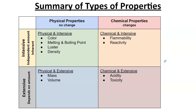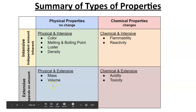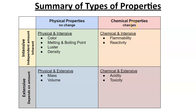Here's a summary of the different types of properties. A property can be physical and intensive, or physical and extensive, or chemical and intensive or extensive. Physical and intensive properties — like color, melting point, boiling point, luster, and density — are observed without change and don't vary with amount. Flammability and reactivity are inherent but require the substance to change to be observed, making them chemical properties.